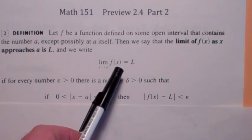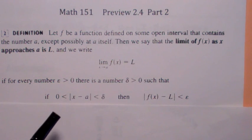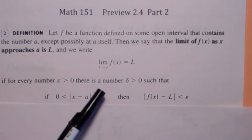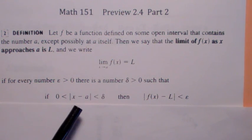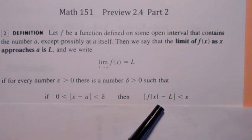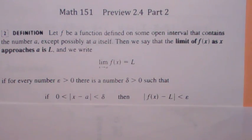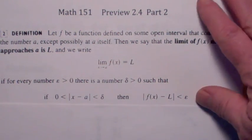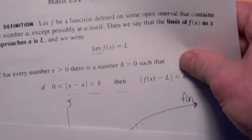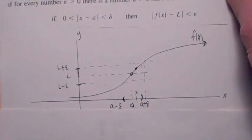Anyway, the limit as x goes to A of f of x equals L means for any epsilon, you can find a delta so that if x is within delta units of A, then f of x is within epsilon units of L. And you should be able to state that, exactly what's written here. And the key to understanding it, of course, is to understand what the picture says.